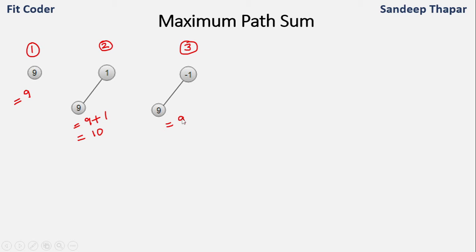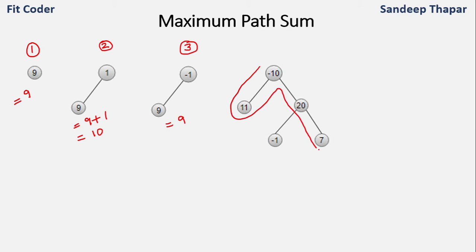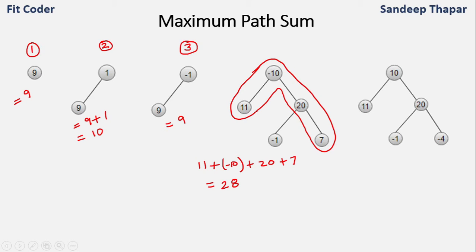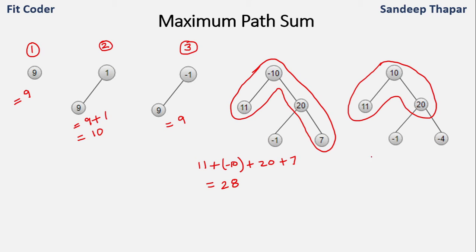Now let's take an example with more than two nodes. In this tree we have both positive and negative nodes. The maximum path sum is comprised of four nodes. In the last example, the maximum path sum is 10, 11, and 20, comprised of three nodes, giving a sum of 41.